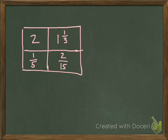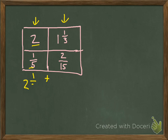I took the area model from the other page and rewrote it here to have more room to work with. We're going to add all these parts together to figure out my final answer. The order does not matter as long as you add them all — you'll get the same answer. I'm going to add each column together and then combine those two sums. I start with the two wholes and add the ⅕ to that — 2 plus ⅕ gives me 2⅕. That's something I can do mentally.